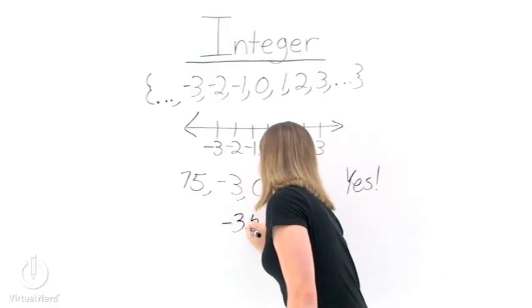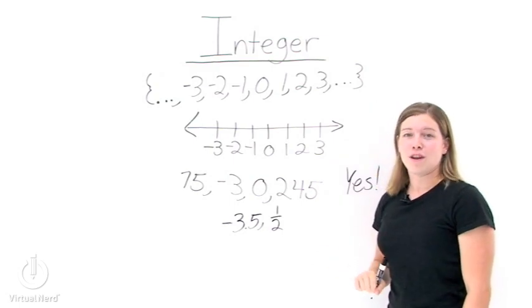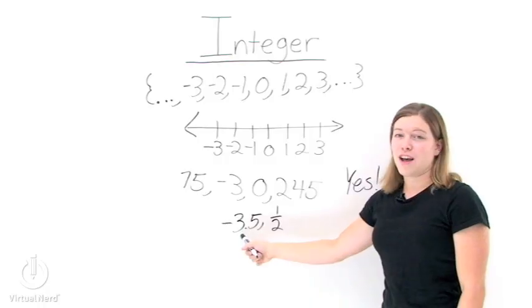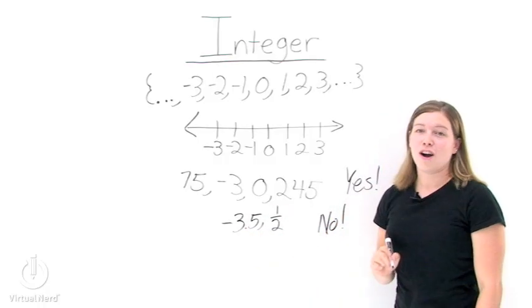Negative 3.5, that's not an integer. Neither is 1 half. Neither of these numbers are integers because they're not contained in this set. 3.5 has a decimal and 1 half is a fraction, so neither of those numbers are integers.